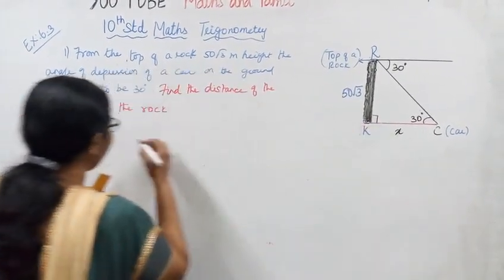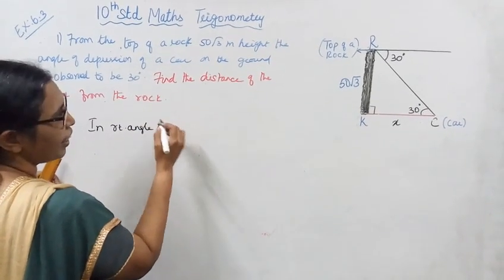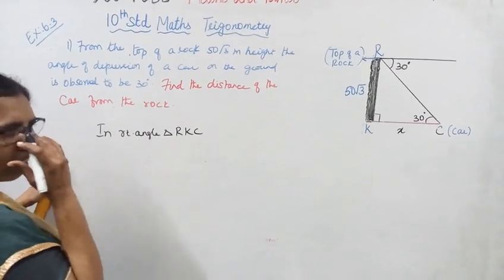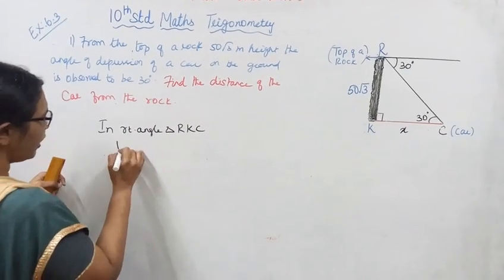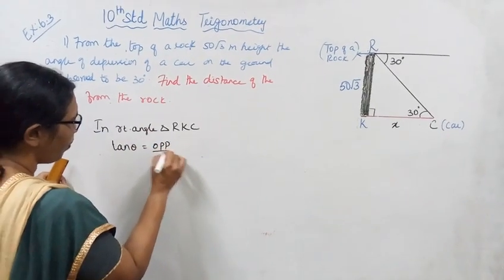Now we have a right angle triangle RKC. In this right angle triangle, we can use the trigonometric formula: tan(theta) equals opposite over adjacent.